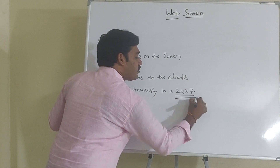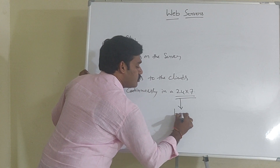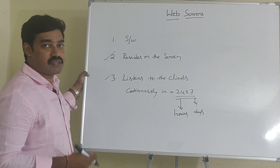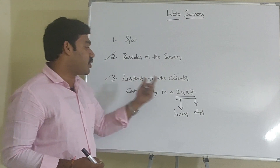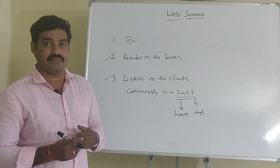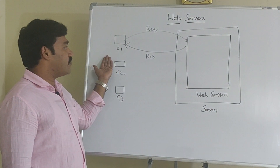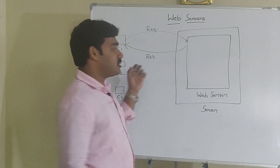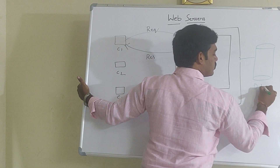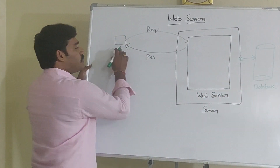In which format? 24x7 format. What is meant by 24x7 format? 24 hours per day and 7 days per week. A day contains 24 hours and a week contains 7 days, so it can work for 24 hours and 7 days, meaning it can listen to the client continuously. We are installing the web server into the server's hard disk. Whenever the client gives a request, it takes the request, connects to the database if necessary, and then sends the response back to the client.